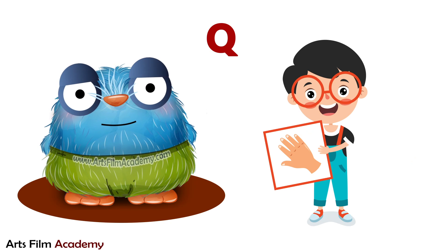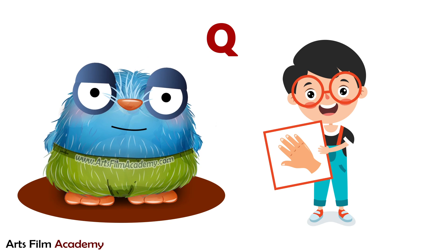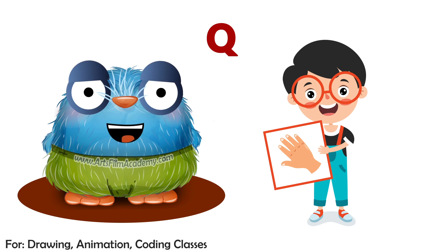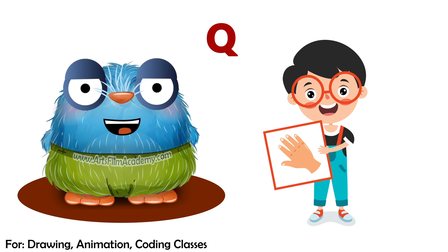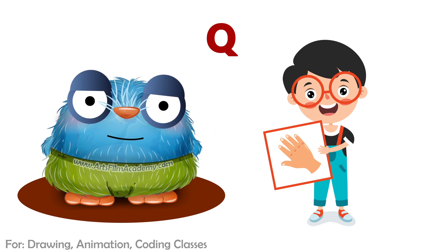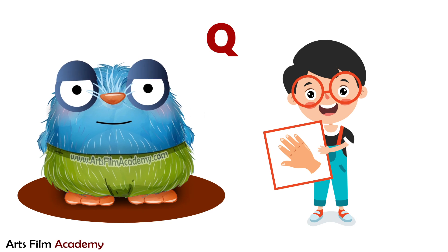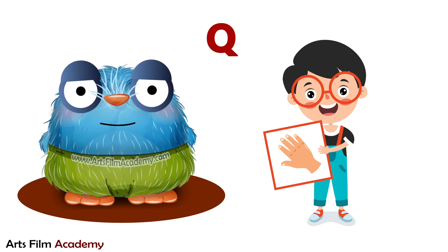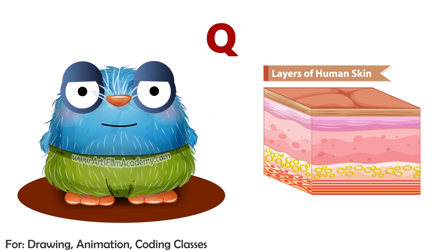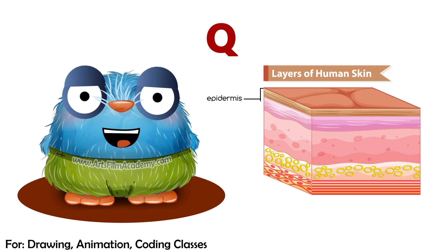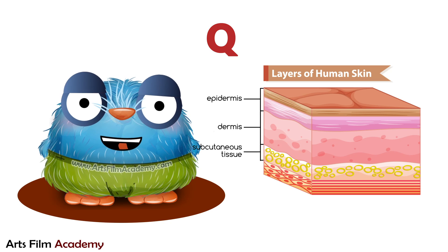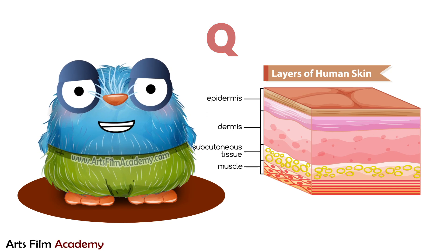Now tell me about skin. It responds to all sensations like touch, pain, heat and cold. Now tell me the layers of human skin: epidermis, dermis, subcutaneous tissue, muscle.